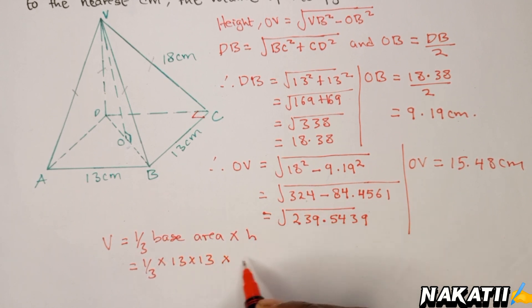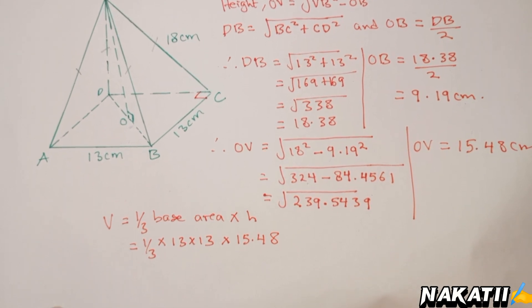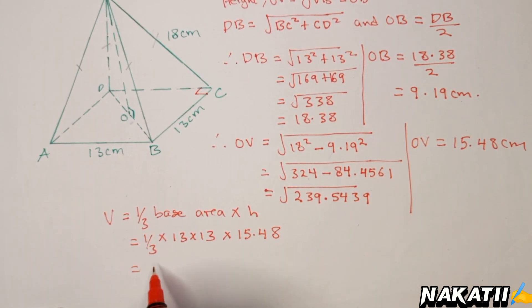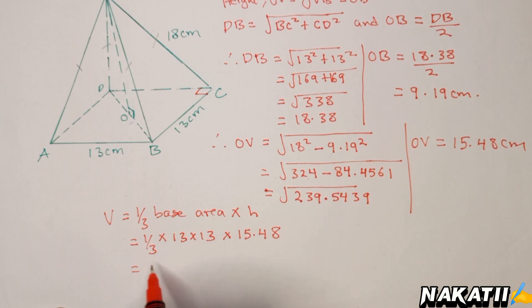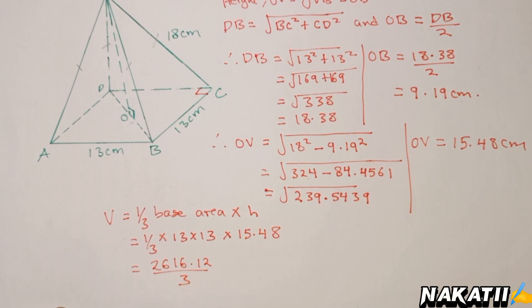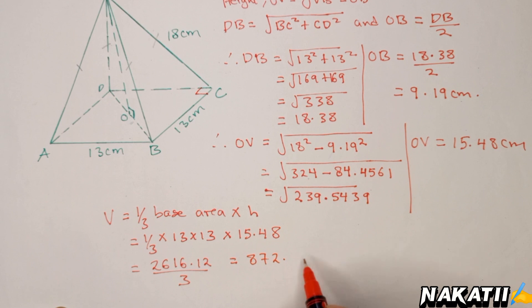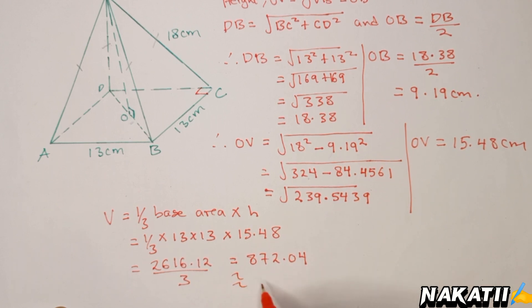When you simplify, multiply 13 times 13 times 15.48 to get 2616.12, then divide by 3. Our answer will be 872.04. Since they asked for the answer to the nearest centimeters cubed, our final answer is 872 centimeters cubed. That is how we approach that question.